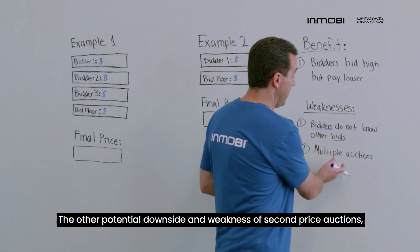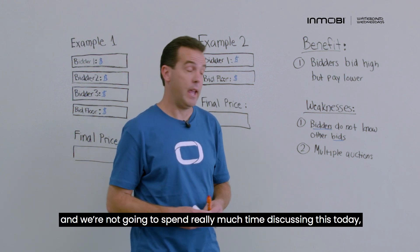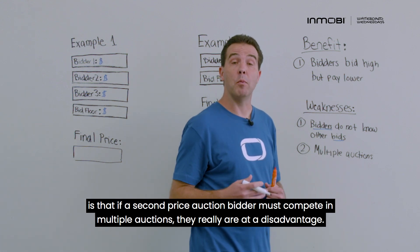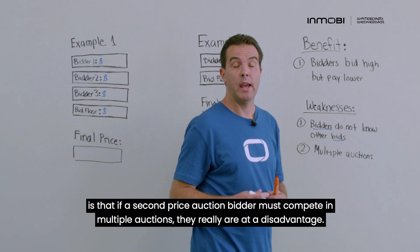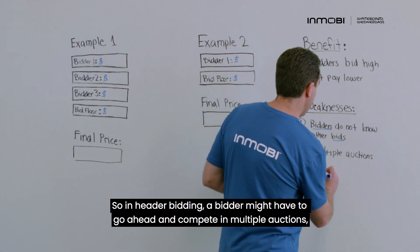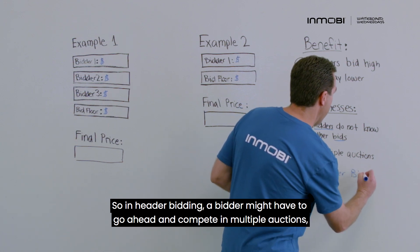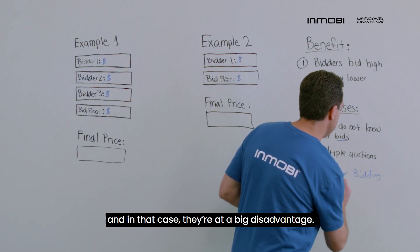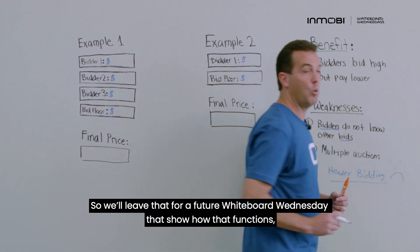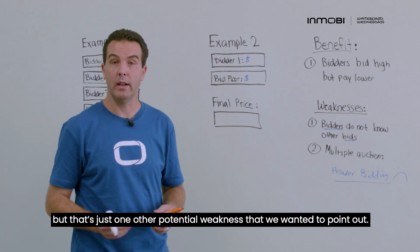The other potential weakness of second price auctions — which we won't spend much time on today — is that if a second price auction bidder must compete in multiple auctions, they're really at a disadvantage. We typically see this come into play with header bidding, where a bidder might have to compete in multiple auctions and is at a big disadvantage. We'll leave that for a future Whiteboard Wednesday, but it's another weakness worth pointing out.